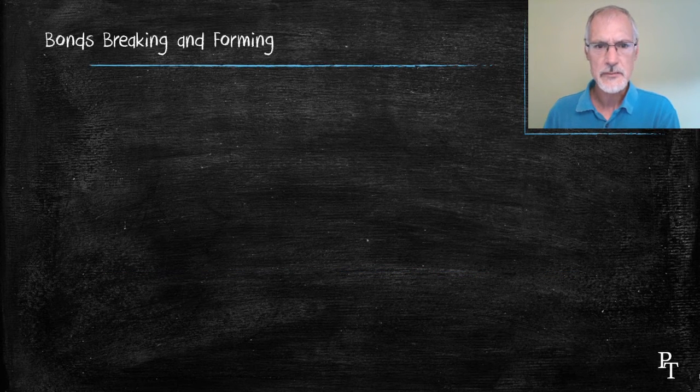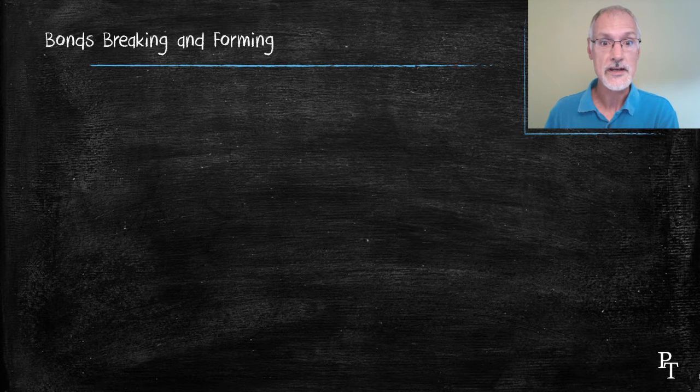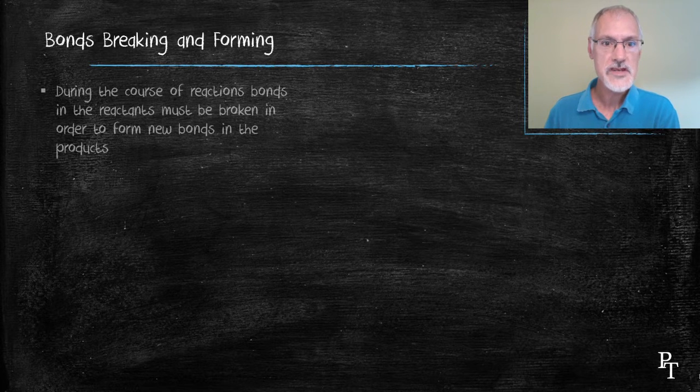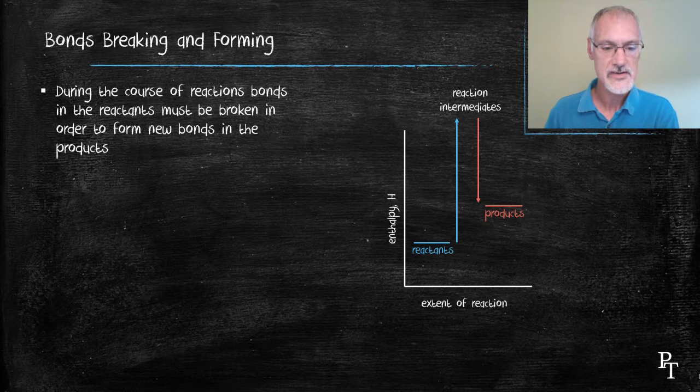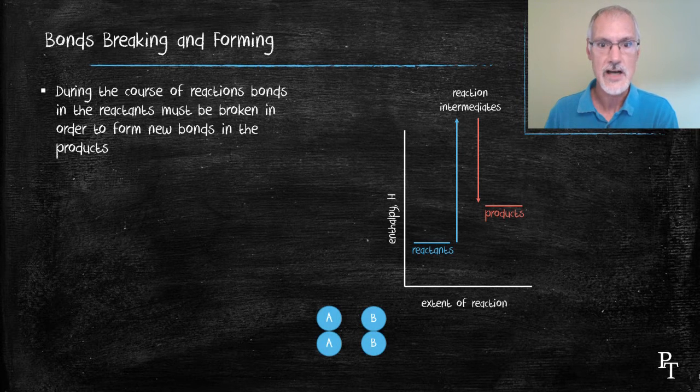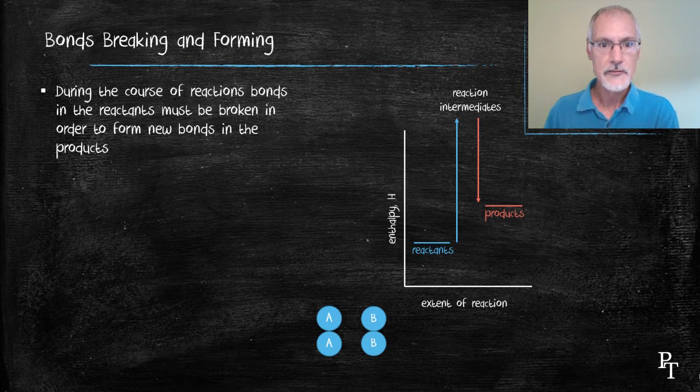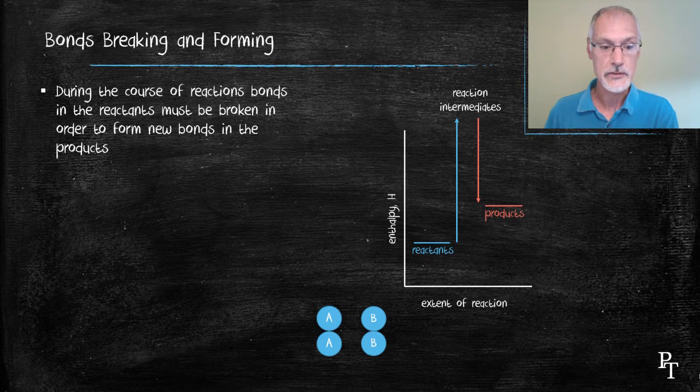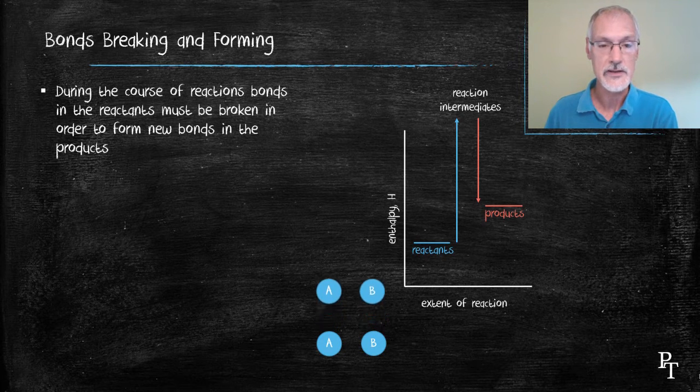First of all we need to understand a bit about the processes of forming and breaking bonds. During most chemical reactions we have two substances, let's say A and B, or diatomic molecules. The first thing we need to do in order for the reaction to occur is to break the bonds that exist between them.